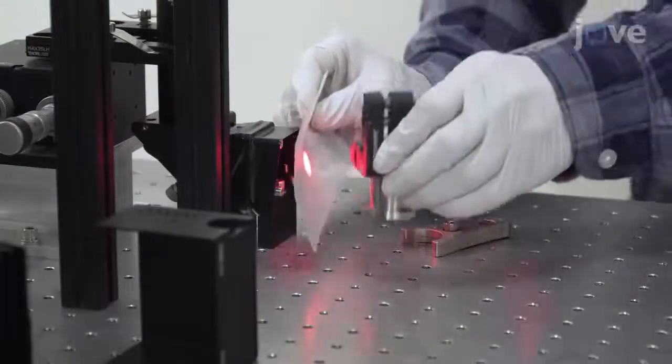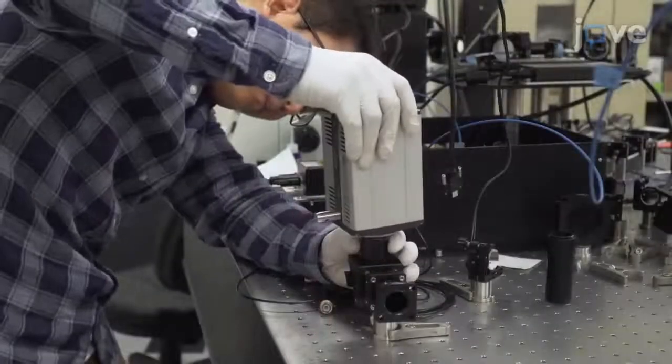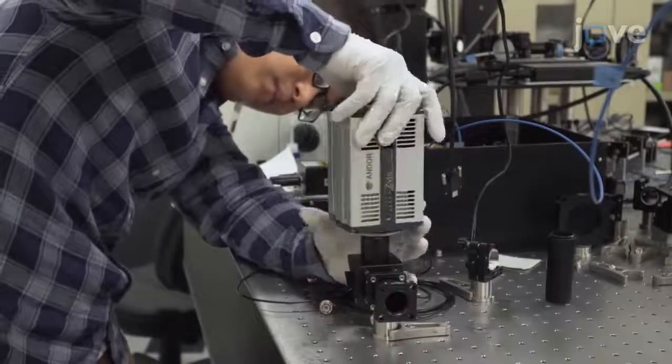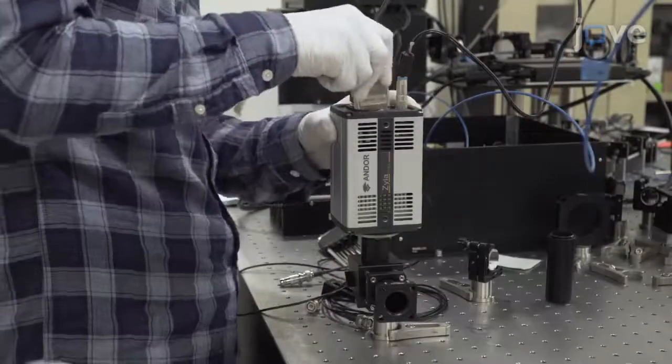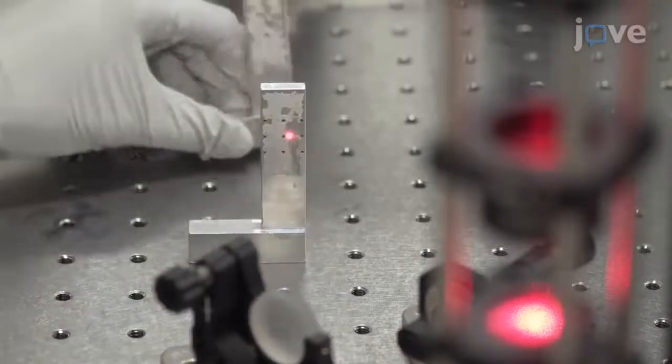Insert a dichroic mirror in the beam path and reflect the beam by 90 degrees. Add mirrors to allow adjustment of the transmitted beam's path to an SCMOS camera. Use the mirrors to ensure the beam hits the center of the chip.